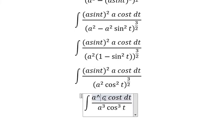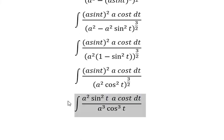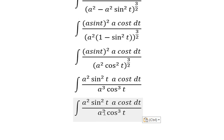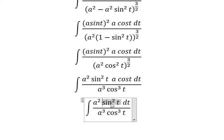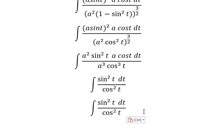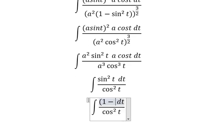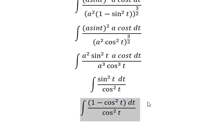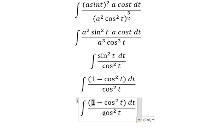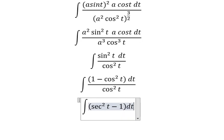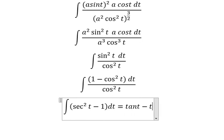We have a²·sin²(t) on top. Now we simplify a³·cos(t) on the numerator and denominator. We change sin²(t) by 1 minus cos²(t). This divided by this gives 1. The integral of tan²(t) we change to tan(t) minus t, plus constant C.